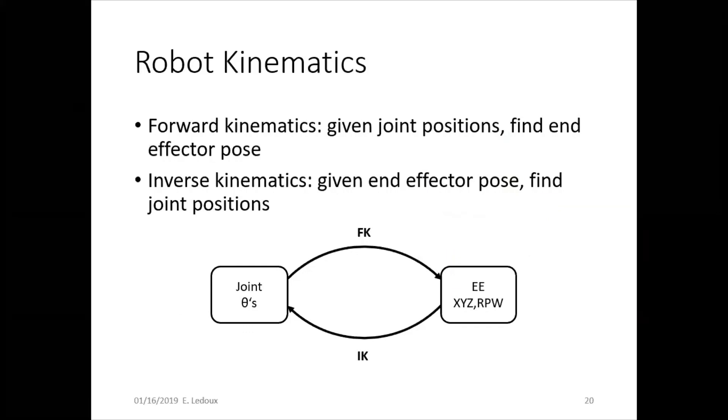For a couple more definitions here, you will need to be able to relate joint positions to end effector pose. So the angles of each joint, or the linear position if it is a cylinder, have to relate to the position of the end effector, XYZ position, and RPW, roll pitch yaw, orientation. Position plus orientation is pose.